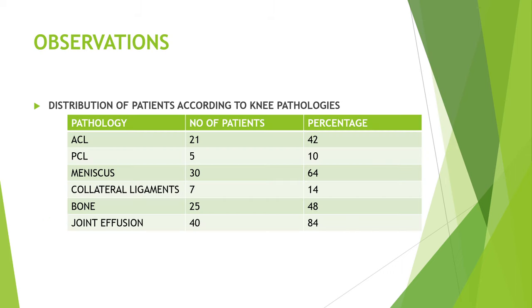Observation: Distribution of patients according to knee pathology. Pathologies observed include anterior cruciate ligament injuries, posterior cruciate ligament injuries, meniscal injuries, collateral ligament injuries, bony injuries, and joint effusion.